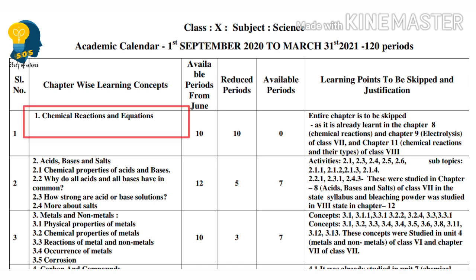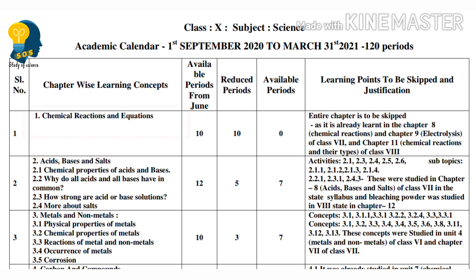The first lesson is Chemical Reactions and Equations. This lesson is completely skipped because you already know that from Class 7th and Class 8.